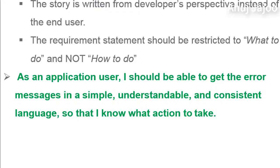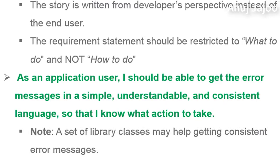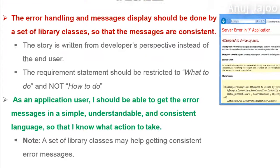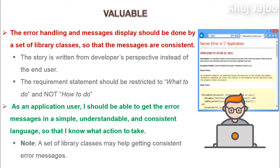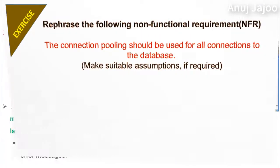This revised story is from the end user's perspective, delivering customer convenience as value. A set of library classes is a way to achieve consistency of error messages — however, it should go to the note section for later discussion. When developers write a story, they immediately start thinking about implementation, and that is when they unintentionally include the solution in the requirement statement. Some organizations use the term technical stories for developer-centric requirements.